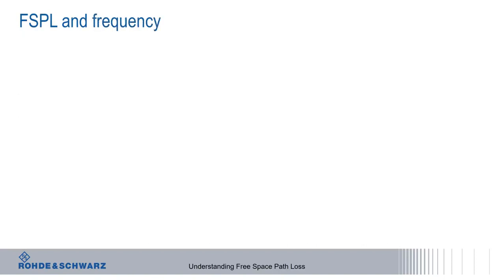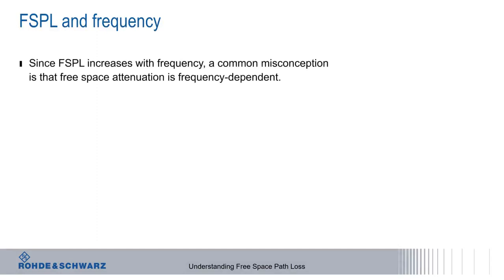It's perhaps a little less easy to intuitively understand why free space path loss depends on the frequency of the signal. There's a very common misconception that free space attenuates higher frequency signals more than lower frequency signals. This is incorrect, because free space, that is, a vacuum, doesn't attenuate signals at all, regardless of frequency.